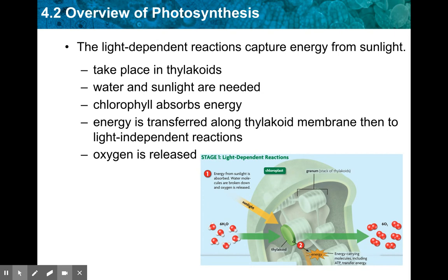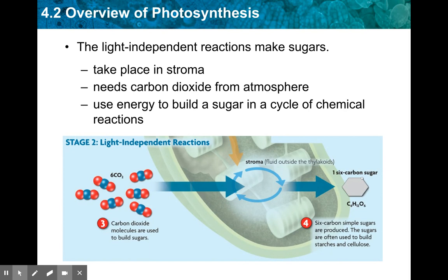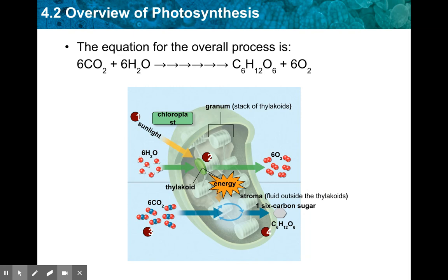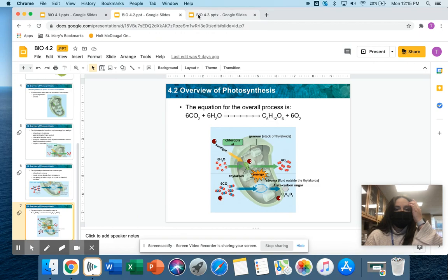The light-dependent reactions generate energy from sunlight — water and sunlight are needed, and chlorophyll absorbs that energy. One of the waste products is oxygen. The light-independent reactions take place in the stroma and, as the name suggests, do not need light to occur. They do need carbon dioxide from the atmosphere, and it is in this stage that we are able to make a sugar through various chemical reactions.